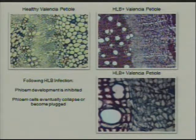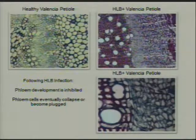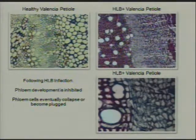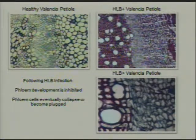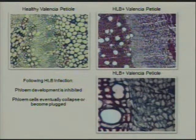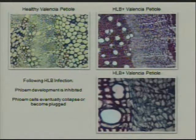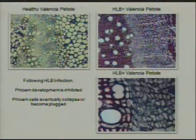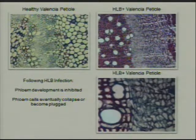If we look at HLB-positive leaves or petioles — in this case a slightly older one — in healthy trees the cells in this area are fully developed and round. In HLB-positive trees that have had the disease for a while, if we look closer up, you can actually see that all that phloem tissue is collapsed. A lot of the parenchyma cells still remain and appear normal size or maybe a little bit smaller, but all that phloem tissue is completely collapsed.